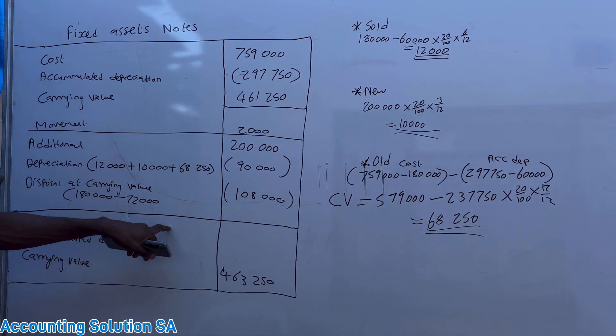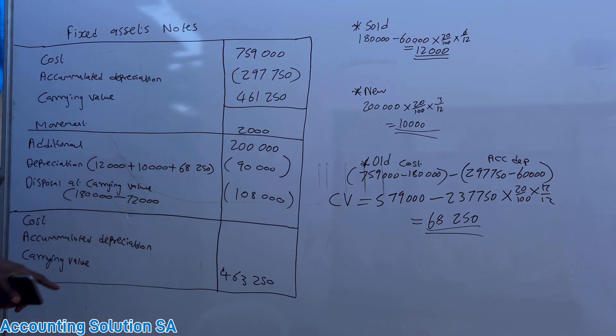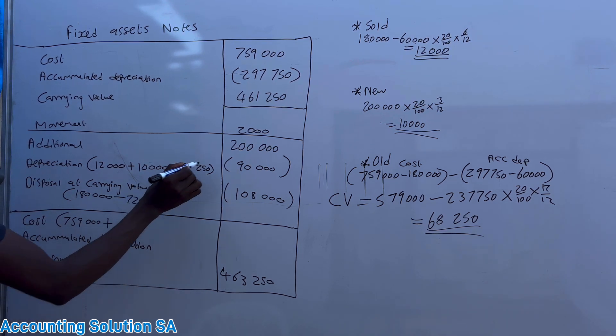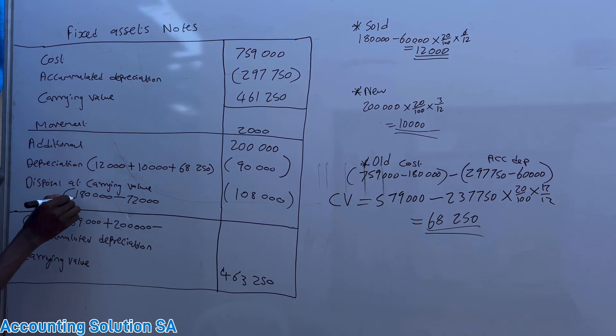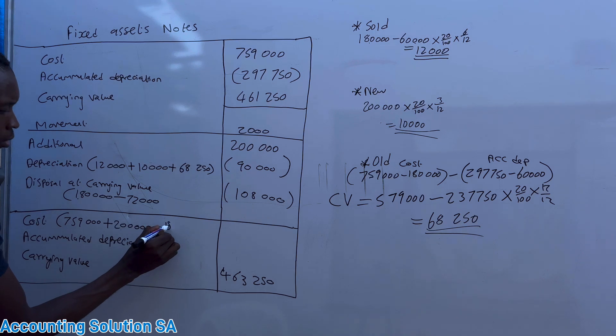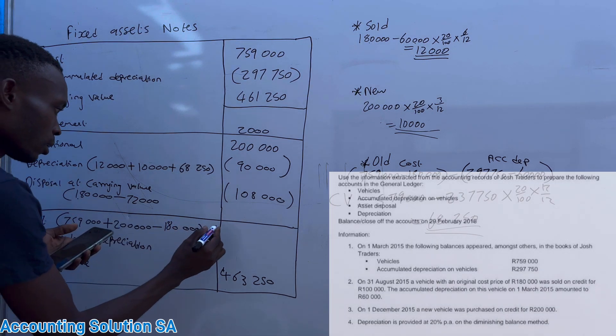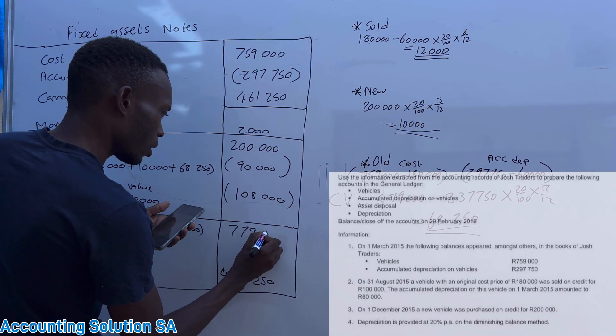Now the cost is very simple. How do we calculate it? Cost at the beginning, let me show here, 759,000 plus additional of 200,000 minus cost of vehicle that has been sold of 180,000. Then if you do this calculation it's gonna give you 779,000.